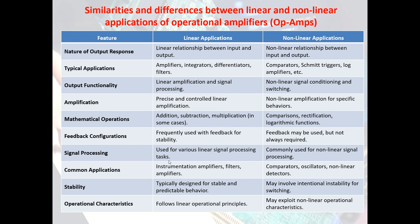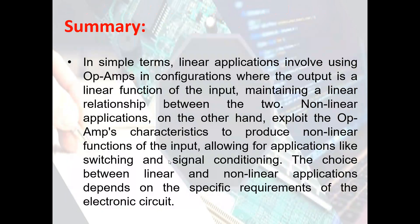In terms of stability, linear applications are typically designed for stable and predictable behavior, while non-linear applications may involve intentional instability for switching. This makes modeling more challenging for non-linear circuits — sometimes you have to derive equations to obtain the desirable transfer function. Linear applications follow linear operational principles, while non-linear applications exploit non-linear operational characteristics. In simple terms, linear applications involve op-amps where the output is a linear function of the input, while non-linear applications exploit the op-amp's characteristics to produce non-linear functions, allowing for switching and signal conditioning. The choice between linear and non-linear applications depends on the specific requirements of the electronic circuit.